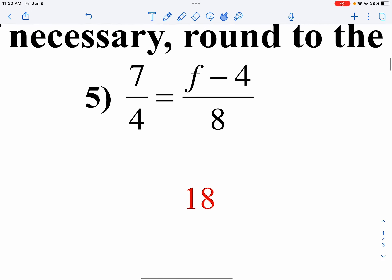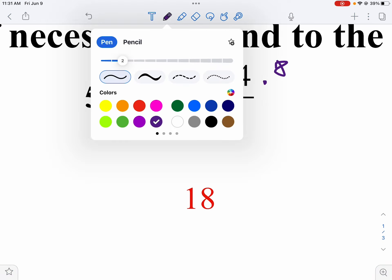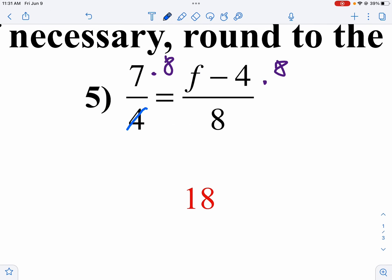On question number 5, I want to get F by itself. So I'm dividing by 8, so I'm going to multiply both sides by 8. Now this time I think I'm actually going to reduce it. Because notice, 4 goes into 8 two times. 7 times 2 is 14. So I get 14 equals F minus 4. Well then we'll add 4 to both sides, and we get 18 equals F. And there's your answer.